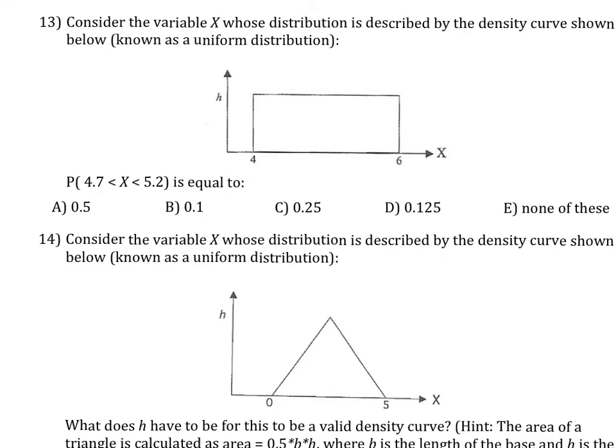For the next couple of problems, we need to apply the property of density curves, namely that the area under any density curve is 100% or 1. That's whether the density curve is a rectangle or a triangle or any odd shape. The area must be 100%. Let's begin with the rectangle.